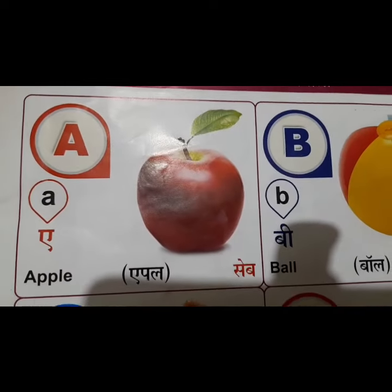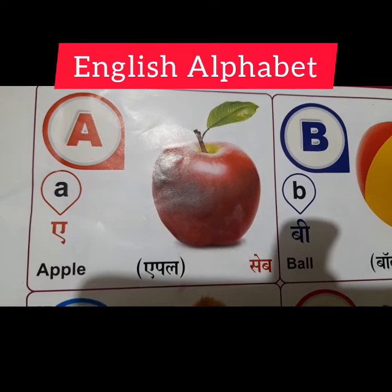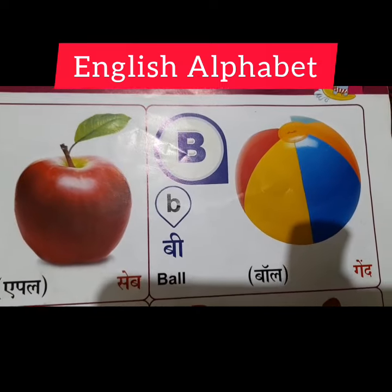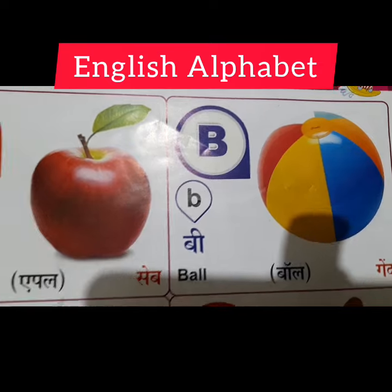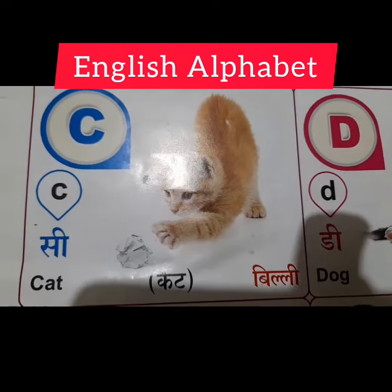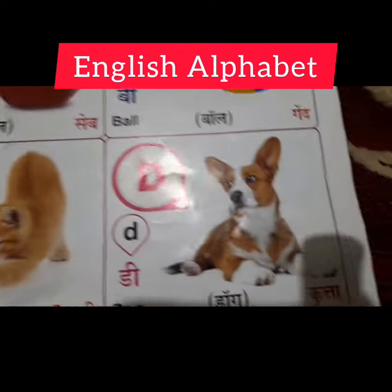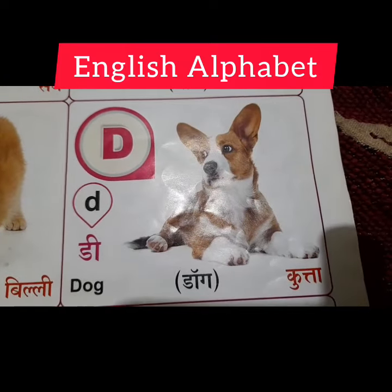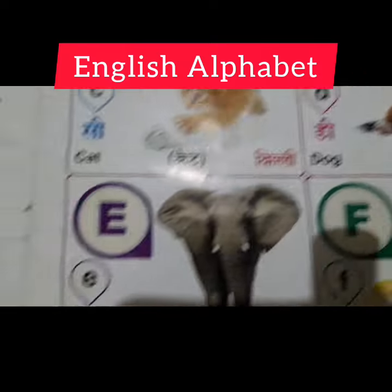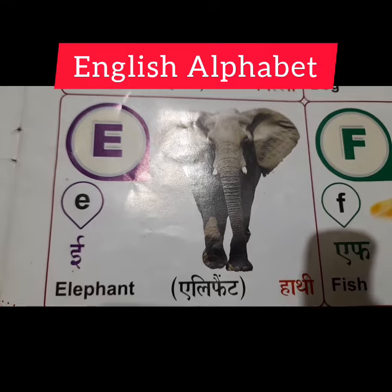A for Apple. B for Ball. C for Cat. D for Dog. E for Elephant.